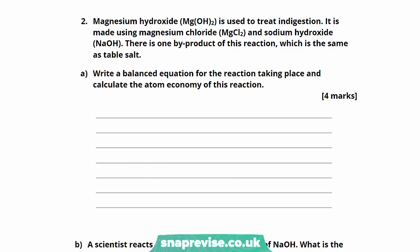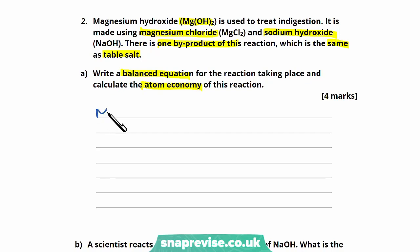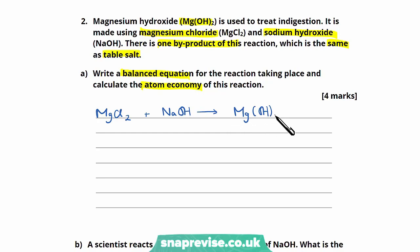Now let's look at the second exam question. Magnesium hydroxide, Mg(OH)₂, is used to treat indigestion. It is made using magnesium chloride, MgCl₂, and sodium hydroxide, NaOH. There is one by-product of this reaction, which is the same as table salt. Write a balanced equation for the reaction and calculate the atom economy. Our reactants are MgCl₂ and NaOH, and our products are Mg(OH)₂ and sodium chloride.